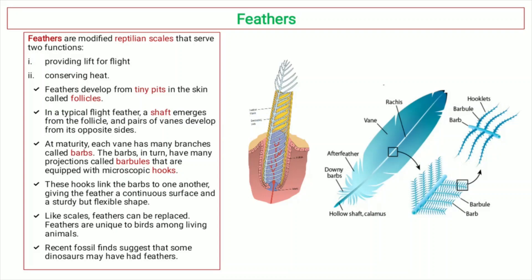If you talk about the flight feathers, a shaft emerges from the follicle. On the shaft, there are pairs of branching structures known as barbs. In the figure, you can see that from the feather shaft, branches emerge in the form of pairs.